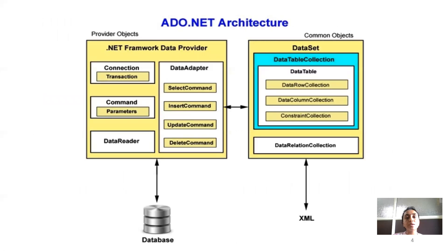Here you can see the ADO.NET architecture. There are two types of partitions: the first partition is for connected access and the second is for disconnected access. Provider objects are mentioned. The first is ADO.NET framework data providers. These include: connection, which provides transaction support; command, which provides parameters; data reader; and data adapter, which provides a bridge between connected and disconnected architectures. The dataset is purely disconnected architecture, while connection, command, and reader are purely connected architecture.